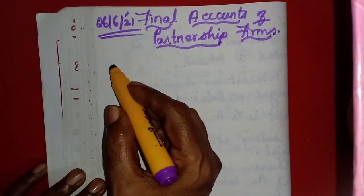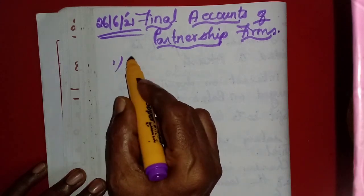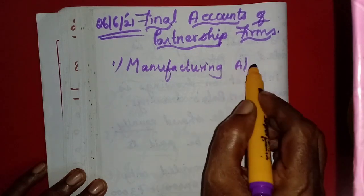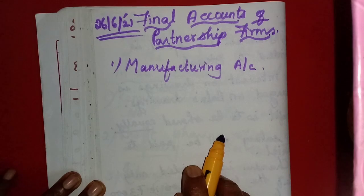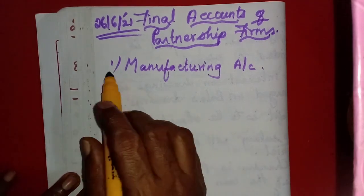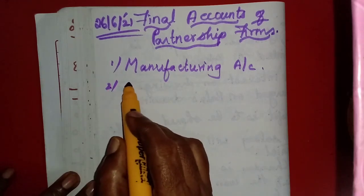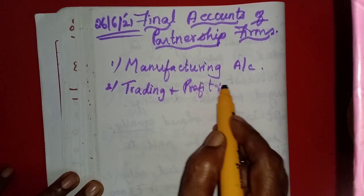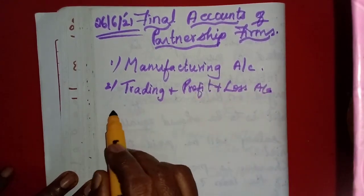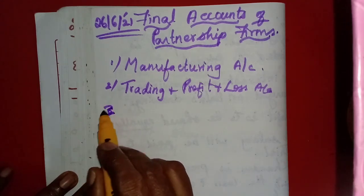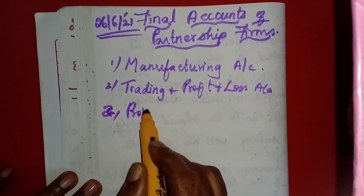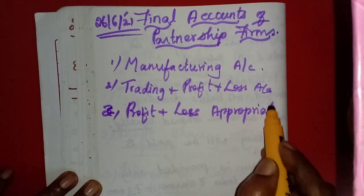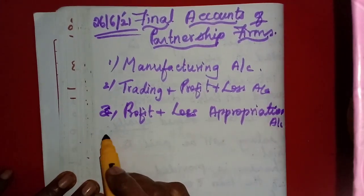Now we will learn the final accounts. What are the final accounts of partnership firms? First one: manufacturing account — before trading account and profit and loss account. If there is a manufacturing activity carried on in the business unit, then first account should be manufacturing account. Then as usual, trading and profit and loss account. Then one more account: profit and loss appropriation account. Then only the balance sheet.